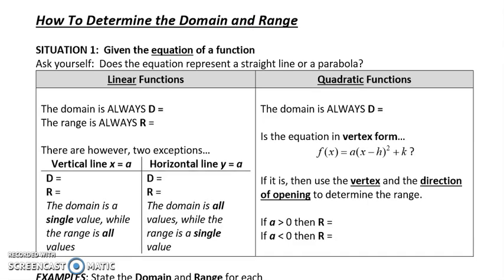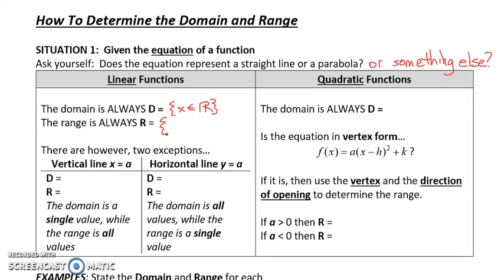Let's do a few examples now — how to determine the domain and the range. The first situation is given the equation of a function. We want to ask ourselves: does the equation represent a straight line or parabola, or perhaps something else? Today in this lesson, we're only going to be dealing with a straight line or parabola. The domain is always, for a linear function, X is a set of all real numbers. And for the range for a linear function, the range is always F of X is a set of all real numbers.